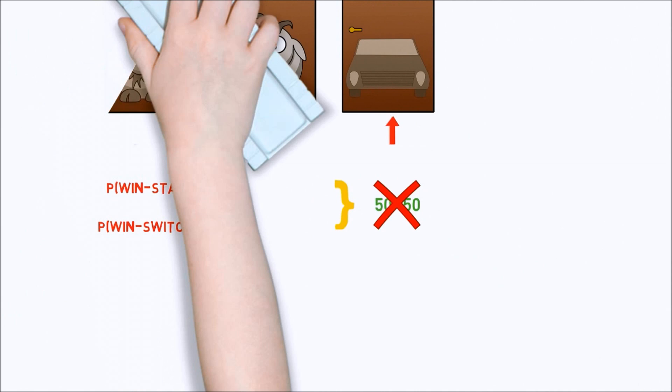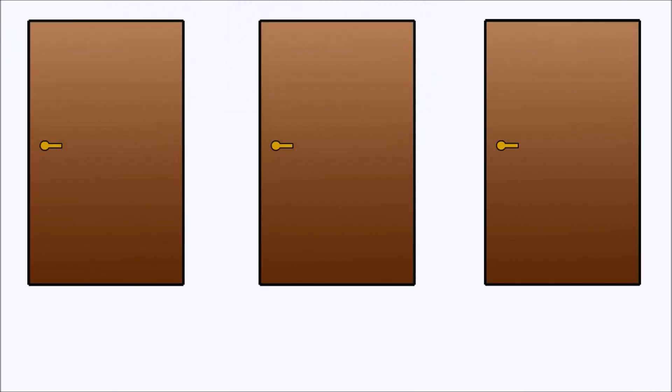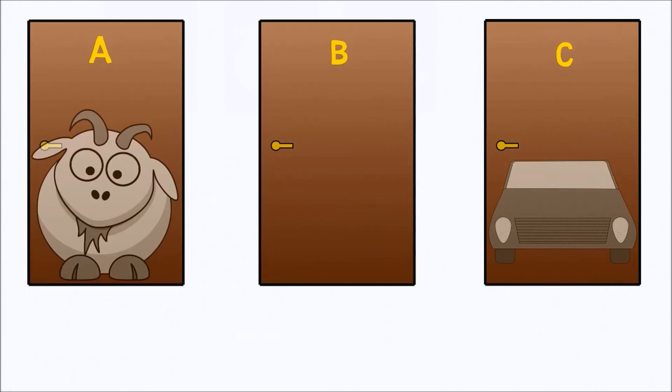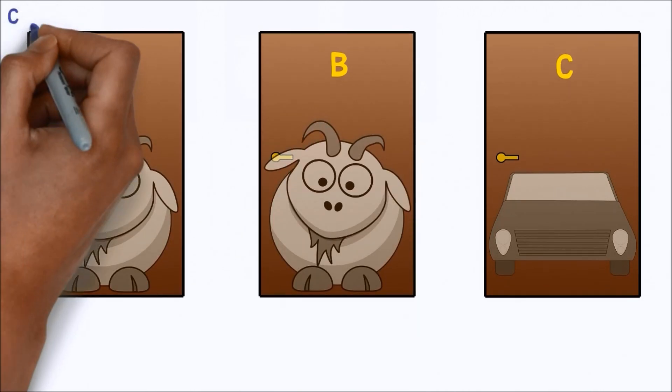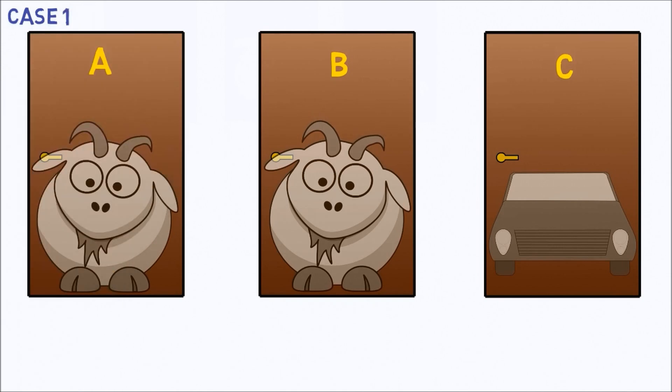Let's understand why. We will assume that C is the winning door, and the two remaining doors, A and B, both have goats behind them. There are three options. First, the contestant chooses the door with the car behind it. He is then shown either door A or door B, which reveals a goat. If he changes his choice of doors, he loses. If he stays with his original choice, he wins.